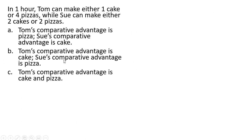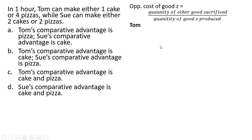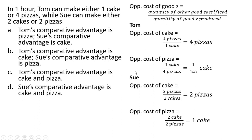Same question, but this time we're asking about who has a comparative advantage. The comparative advantage in pizza goes to the person who can produce pizza at the lowest opportunity cost. Every time Tom produces a pizza he gives up one-fourth of a cake, but Sue gives up one cake when she produces a pizza — one-fourth is less than one. As for cake, Sue has a comparative advantage: she only sacrifices two pizzas to make a cake, while Tom sacrifices four. So Tom's comparative advantage is in pizza and Sue's comparative advantage is in cake.